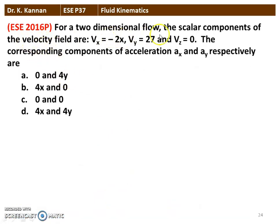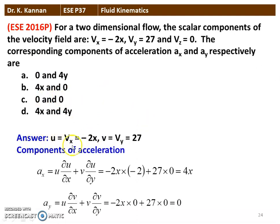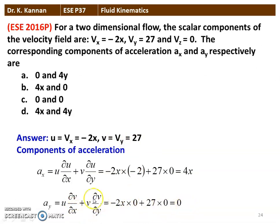Next question from the 2016 question paper: for a two-dimensional flow, the velocity components are VX = −2X, VY = 2Y, and VZ = 0. Find acceleration components AX and AY. With U = −2X and V = 2Y: AX = U·(∂U/∂X) = (−2X)(−2) = 4X; AY = V·(∂V/∂Y) = 0 since V differentiates to a constant. So AX = 4X and AY = 0.